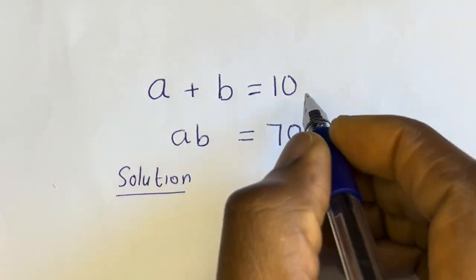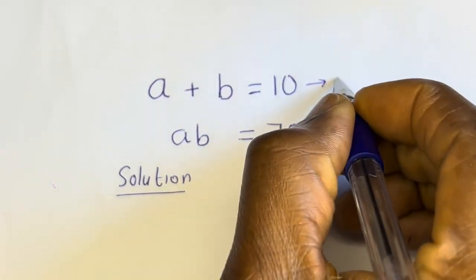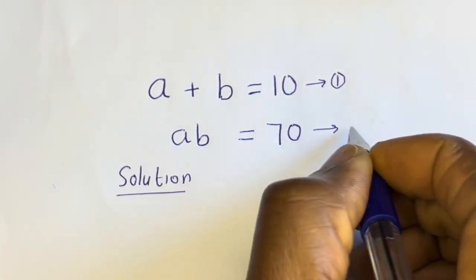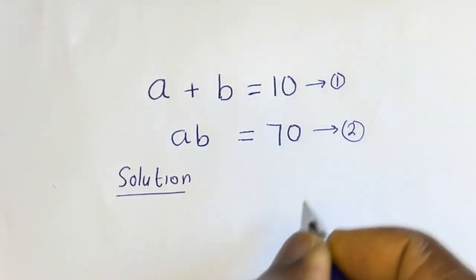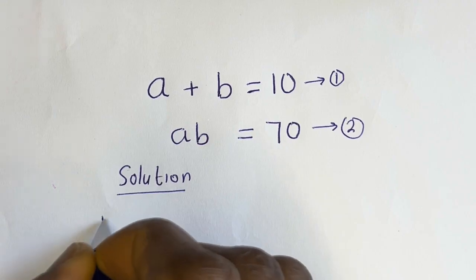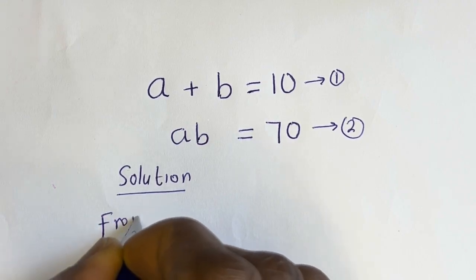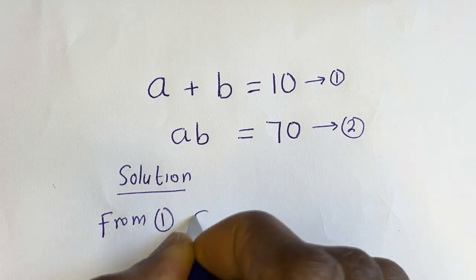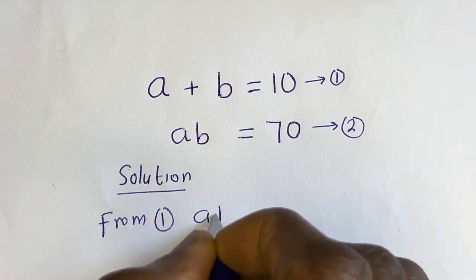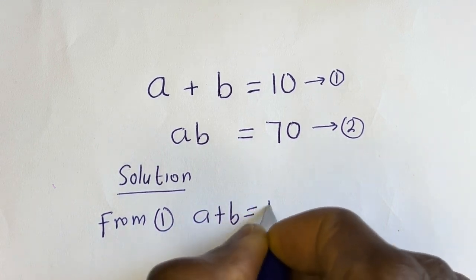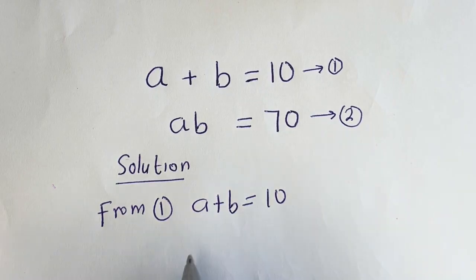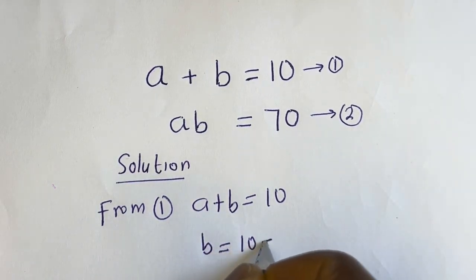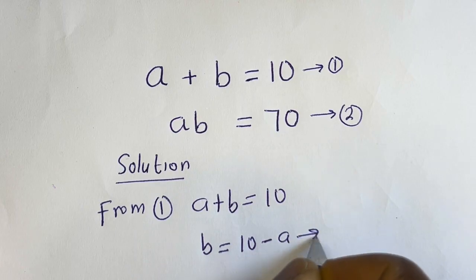A plus B is equal to 10 — let's call this equation 1. AB is equal to 70 — let's call this equation 2. From equation 1, A plus B is equal to 10, then B is equal to 10 minus A — let's call this equation 3.